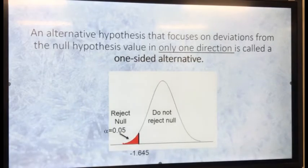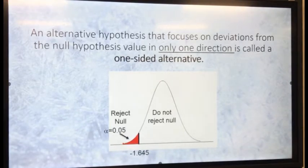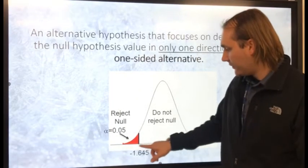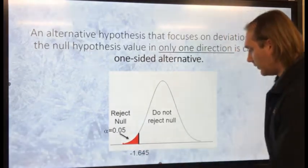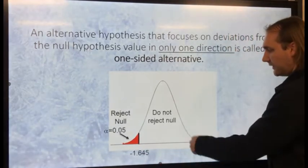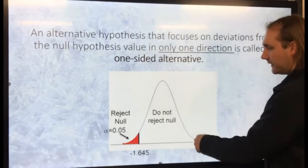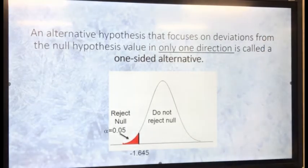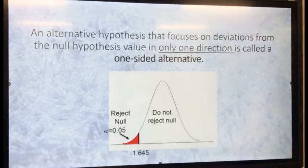An alternative hypothesis that focuses on deviations from the null hypothesis value in only one direction is called a one-sided alternative. So it can either be in this direction or it can be in this direction — one or the other is rejecting our null hypothesis.